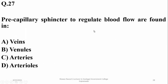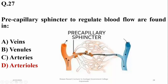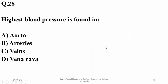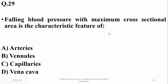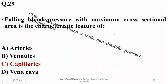Pre-capillary sphincters that regulate blood flow are found in arterioles and meta-arterioles. Highest blood pressure is found in the aorta and lowest blood pressure is observed in the vena cava, so the right option is the aorta.